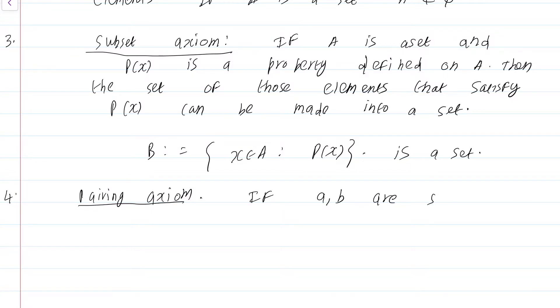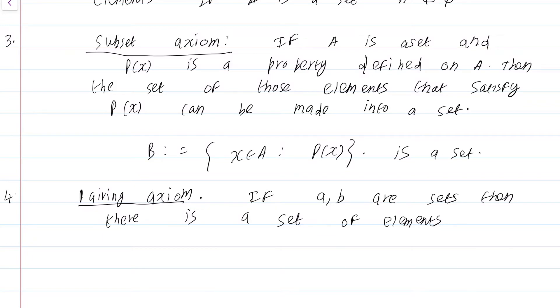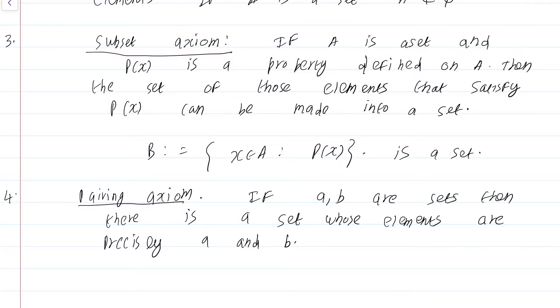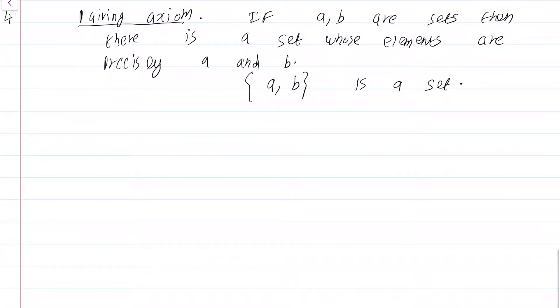This says the following. If a, b are sets then there is a set whose elements are precisely a and b. In other words {a, b} is a set. Now, why is this so useful? Well, you can use it to construct an ordered pair. This construction is due to Kuratowski. You consider the ordered pair (a, b) as a set with {a} and a set with {a, b}.